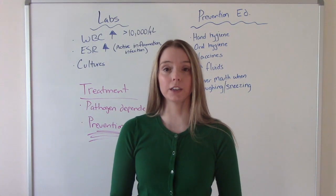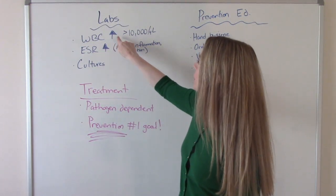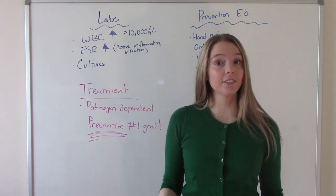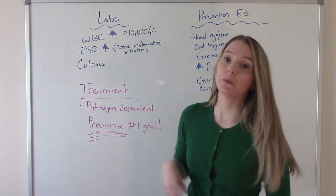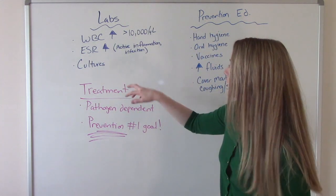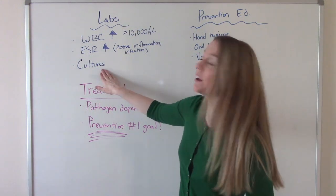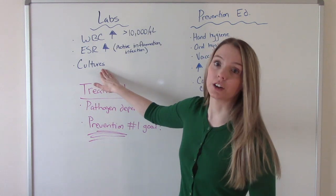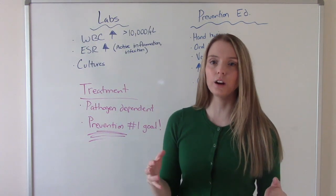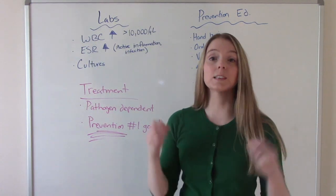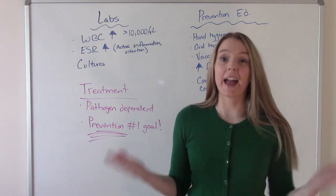If we suspect an infection on our patient, we're going to take a few different labs. We're going to take a CBC, and what we're looking at is their white blood cell count. If it's elevated, that indicates there's something going on, there may be an infection. Their ESR rate will be elevated, which tells us there's some sort of active inflammation or infection in the body. And then if we can, we're going to take a culture - a culture from fluids, a culture from a wound, from blood. Wherever we can take a culture from, we're going to take a culture, and that's going to help us identify the specific type of pathogen that's infecting our patient.